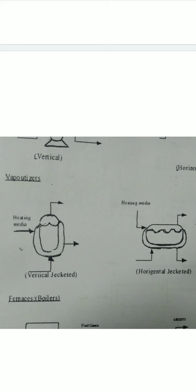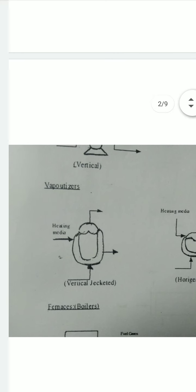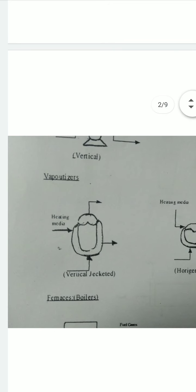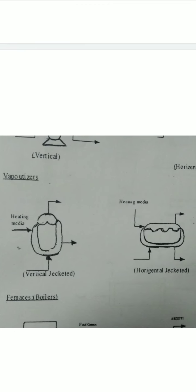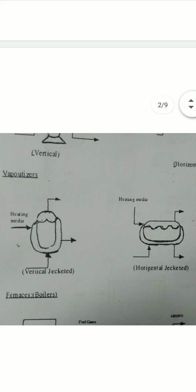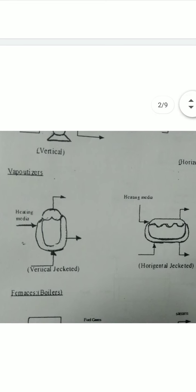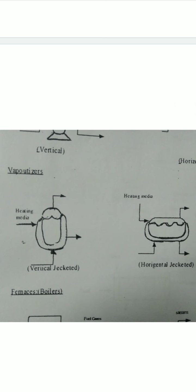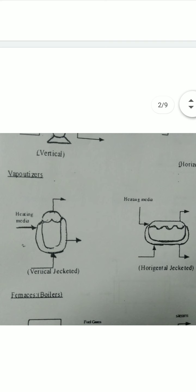You can draw the vaporizers — both vertical and horizontal jacketed vaporizers. The PDF form with these symbols will be shared so you can practice and remember them. The vertical jacketed vaporizer and horizontal jacketed vaporizer symbols are similar to a heater symbol.